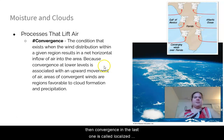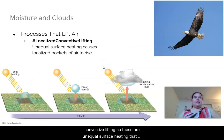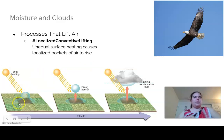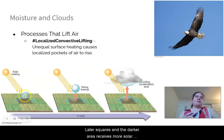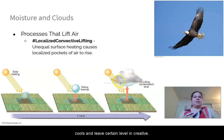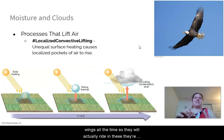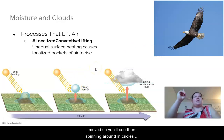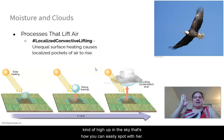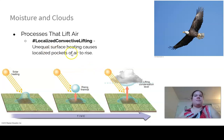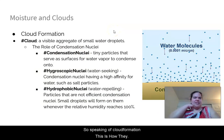The last lifting mechanism is localized convective lifting — unequal surface heating causes localized pockets of air to rise, called thermals. Darker surfaces absorb more solar energy, rise into a thermal, and when the air cools at a certain level it creates a cloud. Birds are lazy and ride these thermals — you can spot a thermal by watching birds spinning in circles high in the sky.